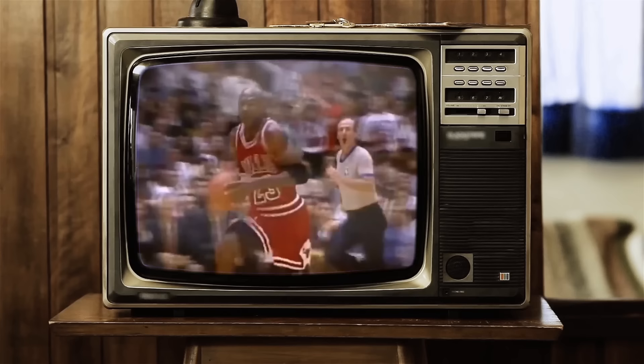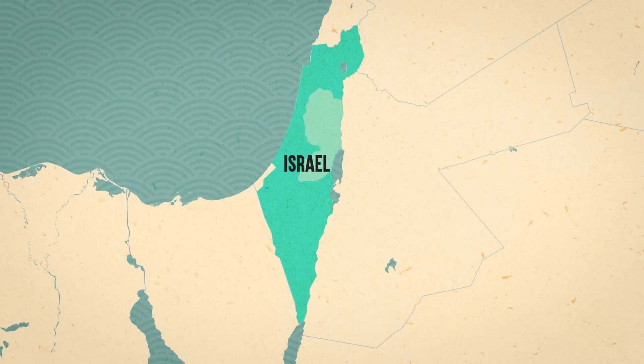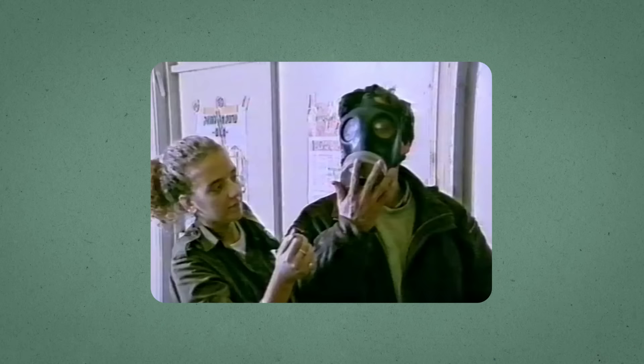Do you remember 1991? Maybe you weren't born yet, but for me, 1991 was the best year. Michael Jordan won his first NBA championship, and Nirvana released the greatest album of all time. But things were a little less rosy over in Israel, because the tiny state was pulled into a massive mess — a mess that had the government handing out gas masks to every man, woman, and child in anticipation of a chemical war. What in the world would make the government do that?